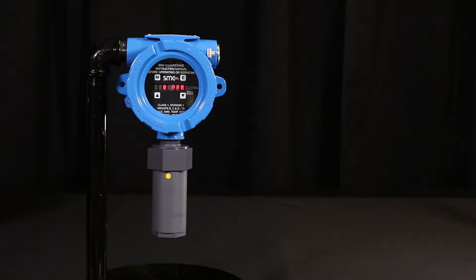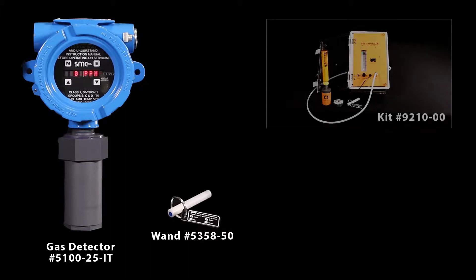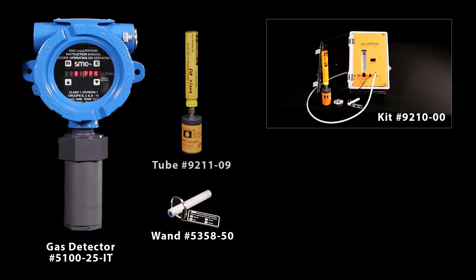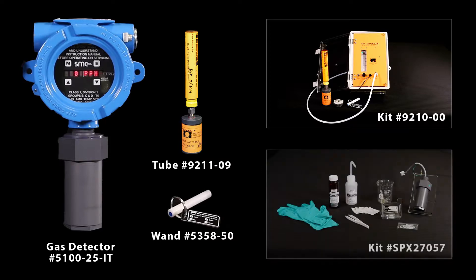The following tools are required to carry out this procedure on the ammonia gas detector: the 5100-25-IT gas detector, the magnetic wand, permeation system to calibrator kit, the ammonia permeation tube, and the ammonia cell recharge kit.